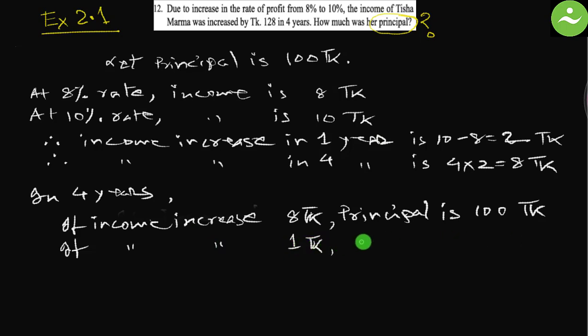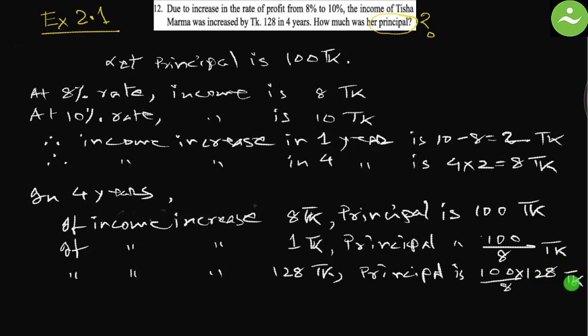We are using unitary method. If income increases 8 taka, then principal is 100 taka. Now, if income increases 128 taka, then principal will be 100 by 8 times 128 taka. If we divide 128 by 8, it becomes 16, so equals to 1600 taka.